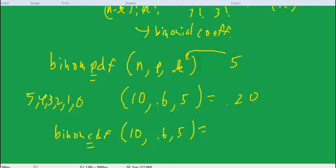And we get 0.367. So the probability of hitting exactly 5 free throws is 0.20, and the probability of hitting 5 or fewer is 0.367.